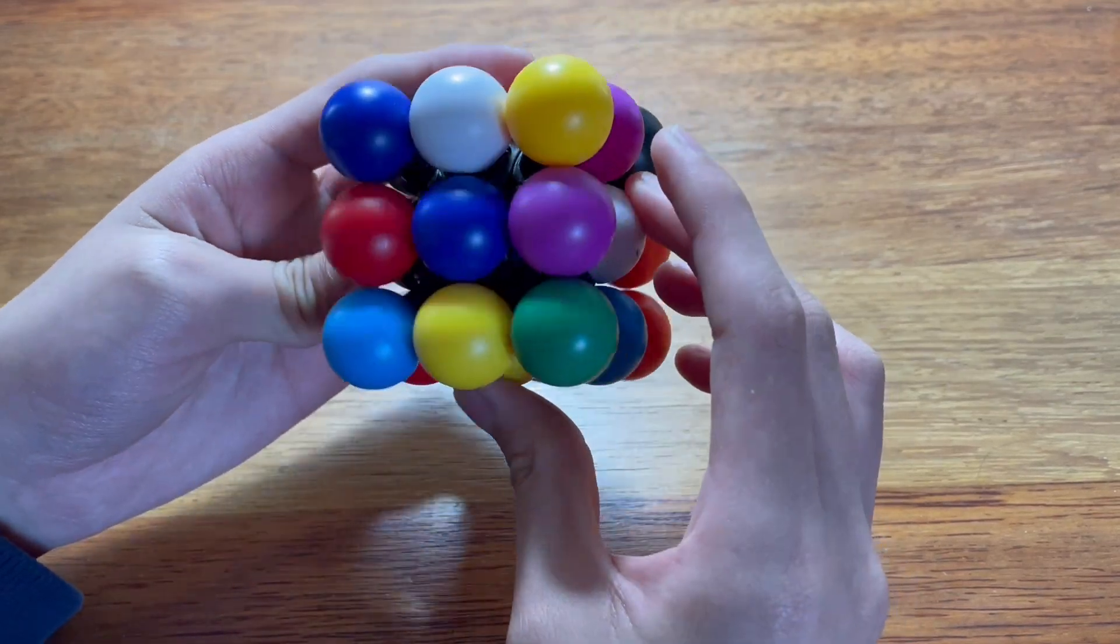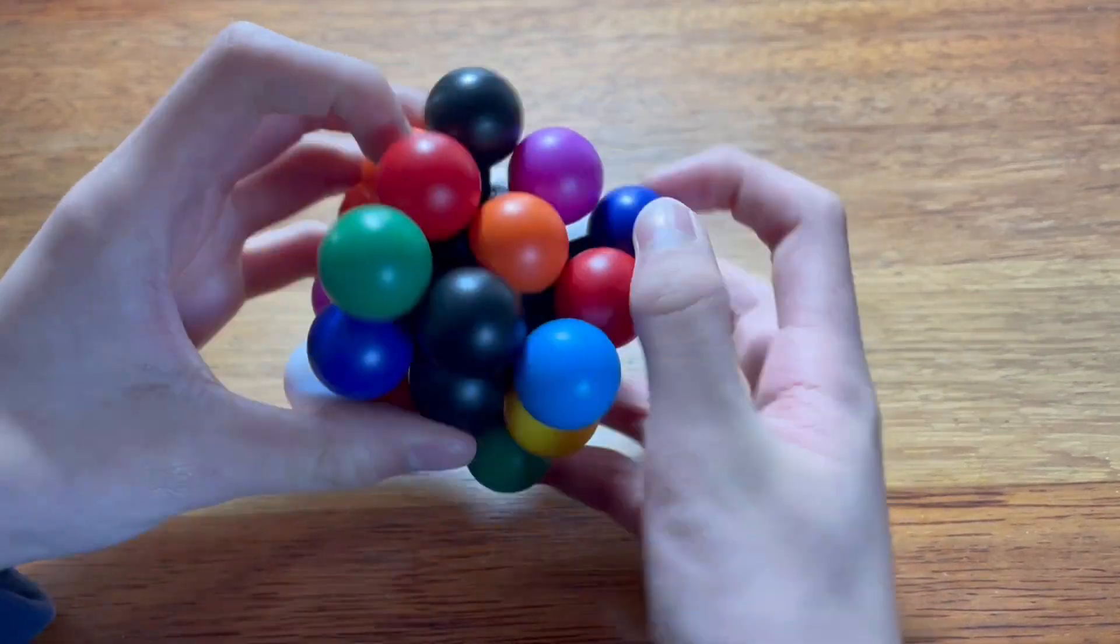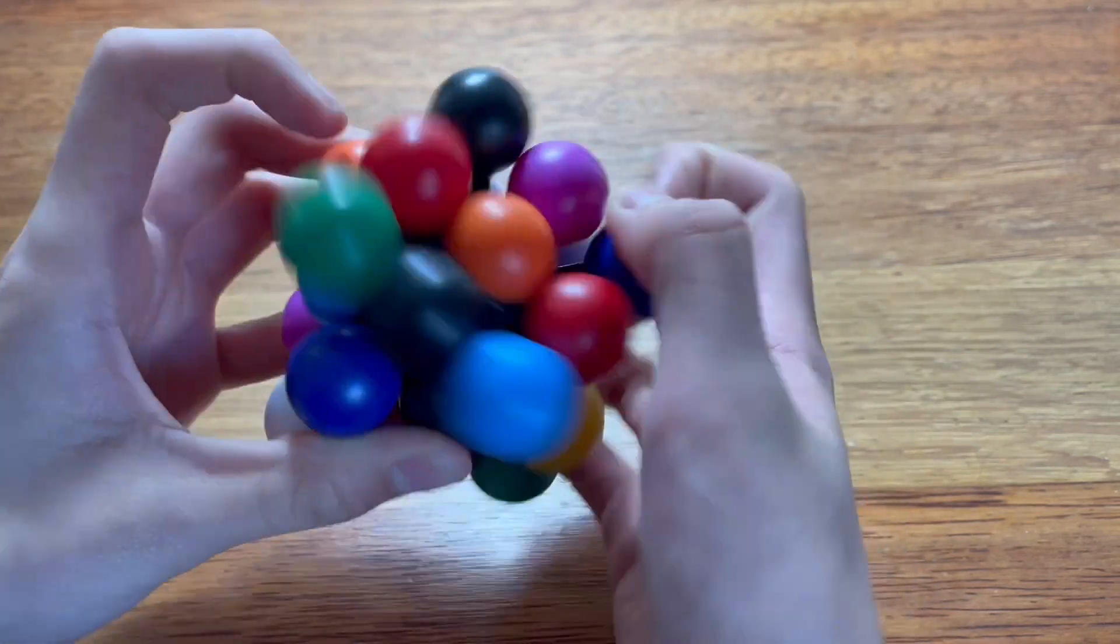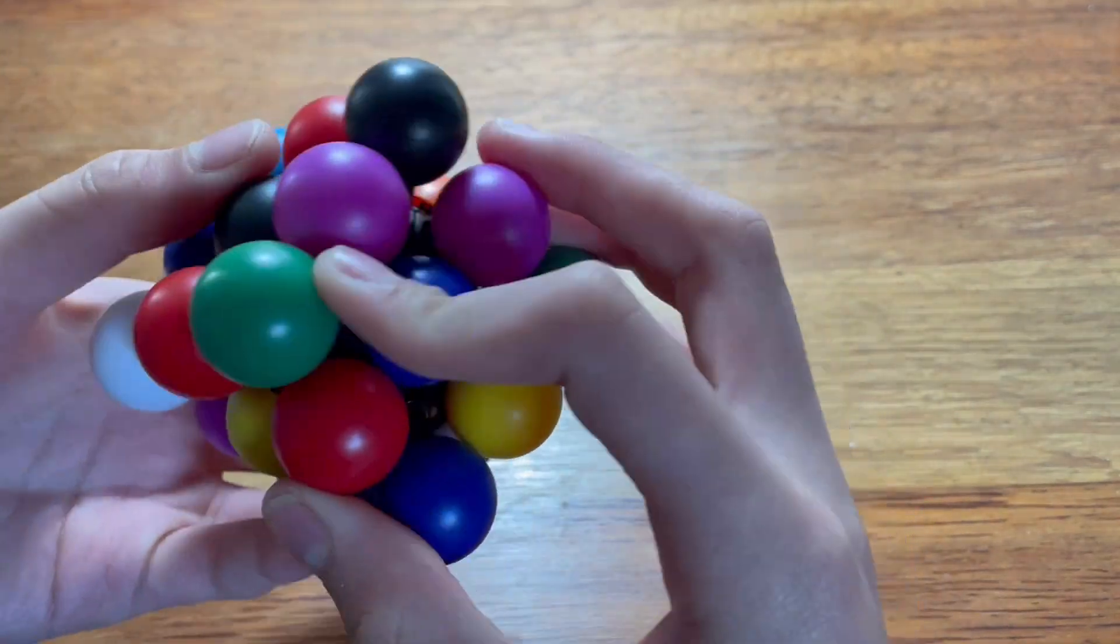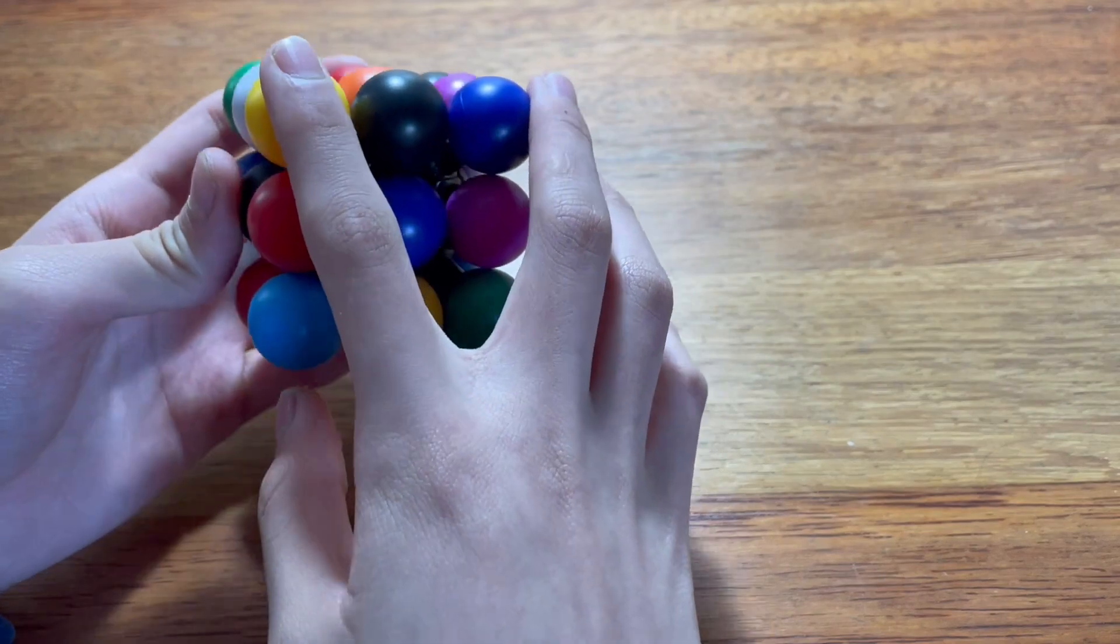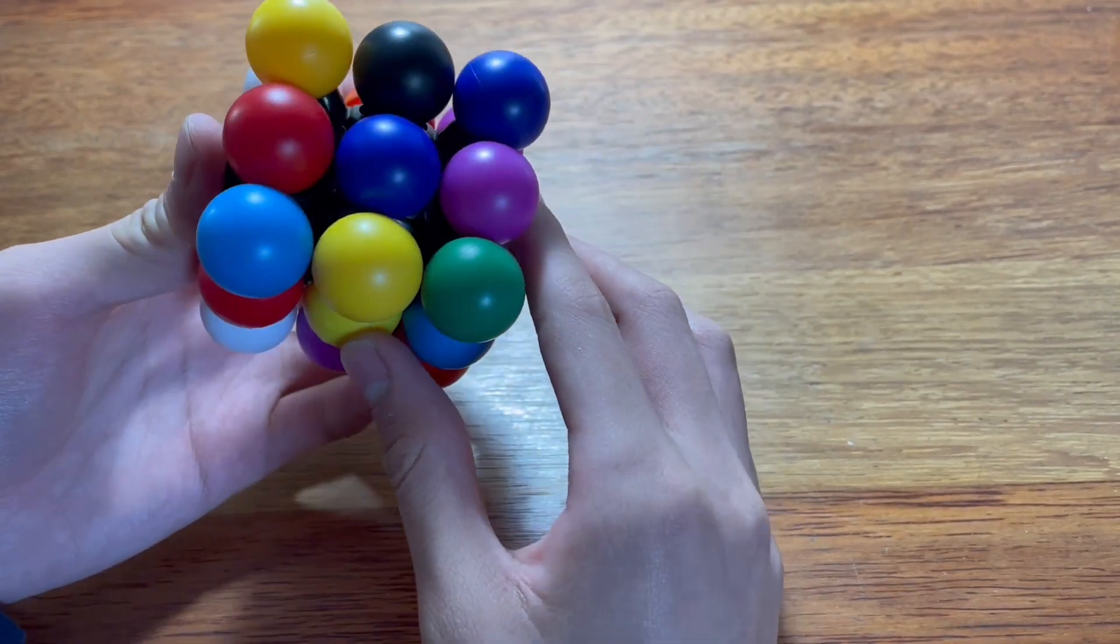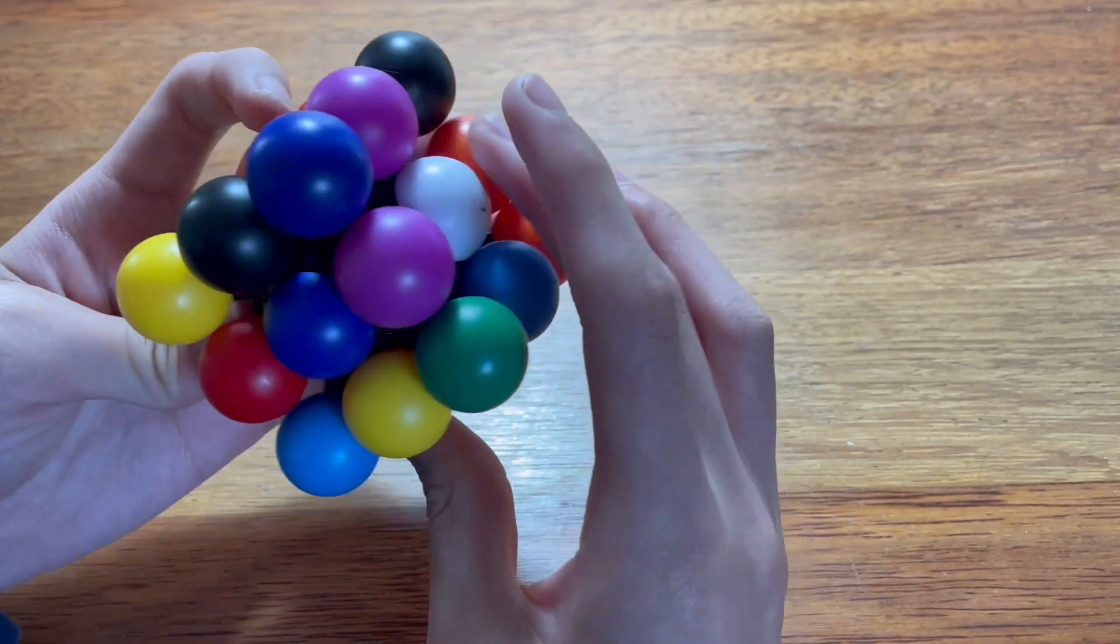So if I just do a T perm here, I mean, or a J perm. Okay. So that should have switched these two corners. All right. So now, wait, that doesn't do anything. Did that do something?